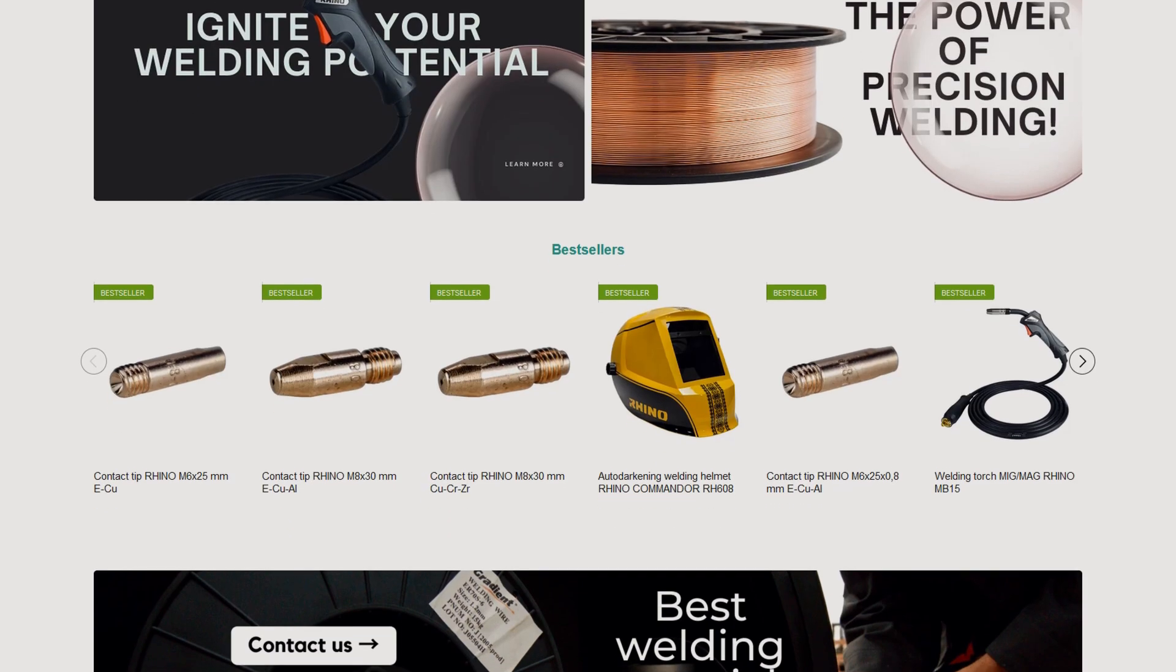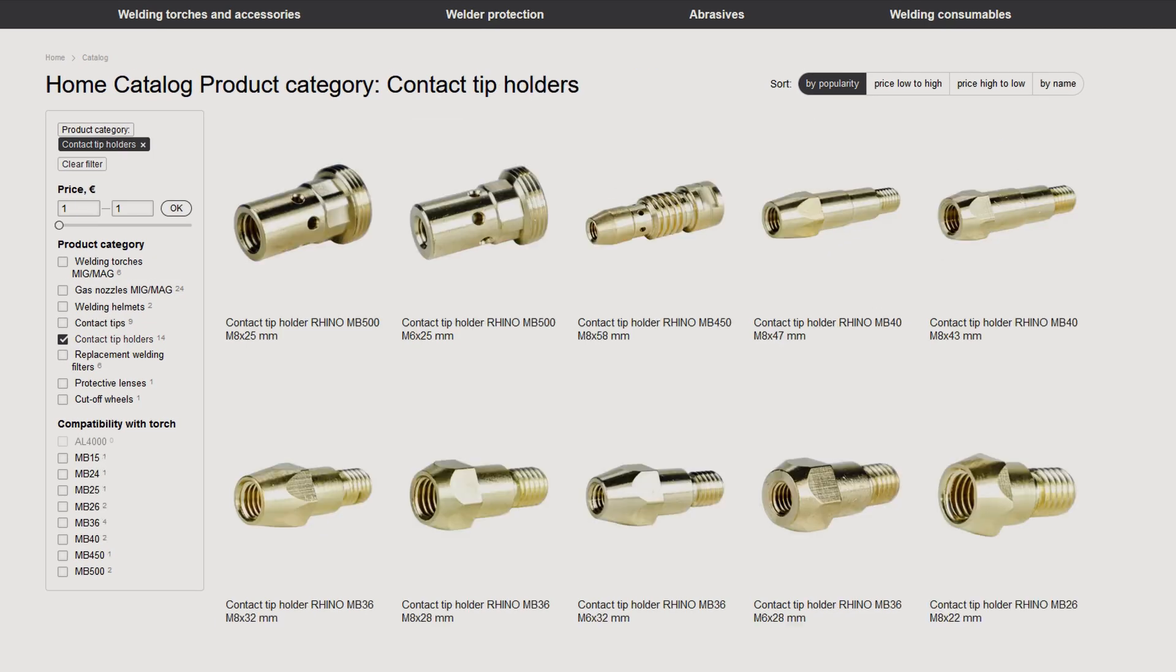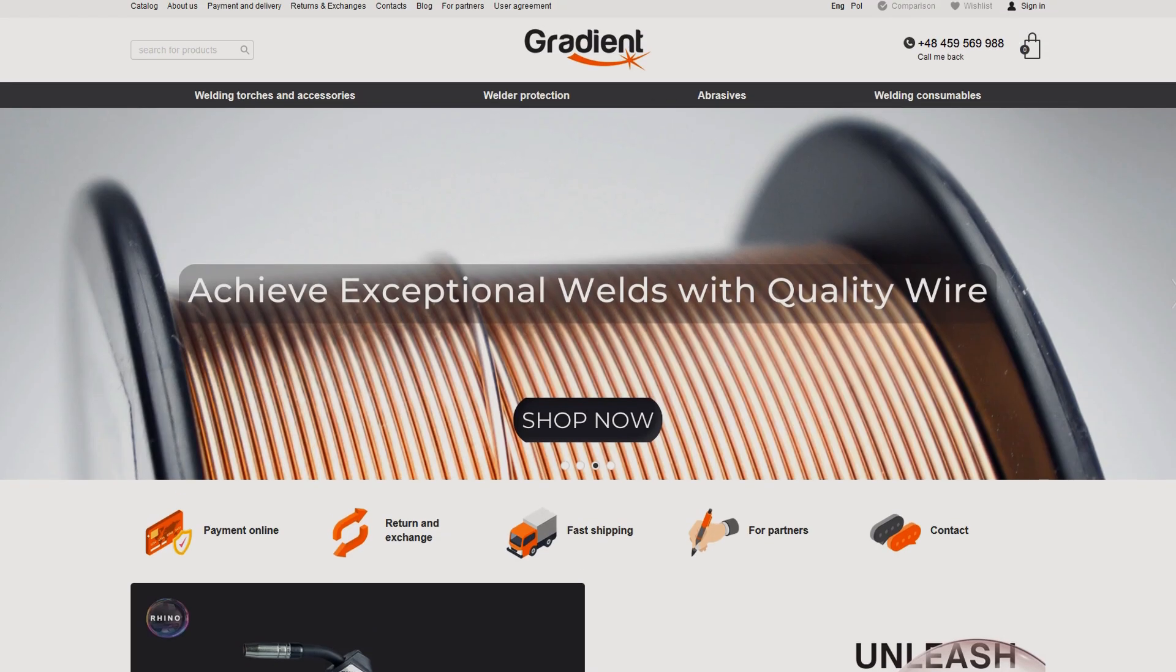And of course friends, on our website GradientUA.com you will find an assortment of torches and torch accessories, welder protection products and many other items. The link is in the description.